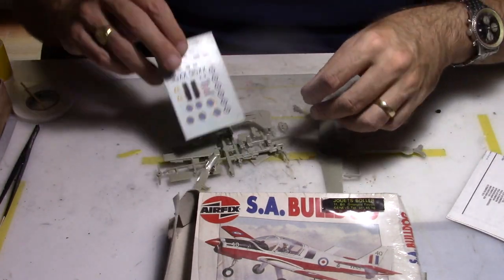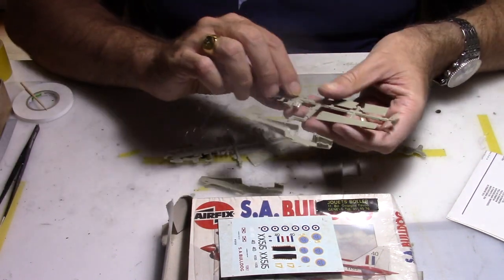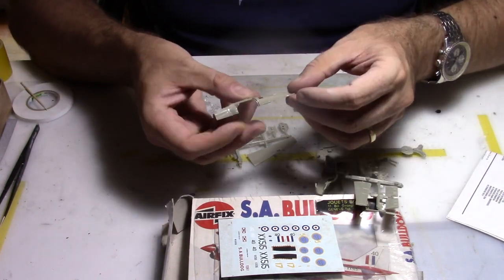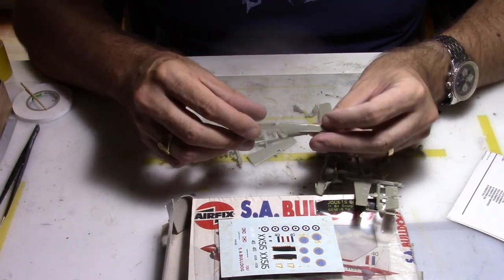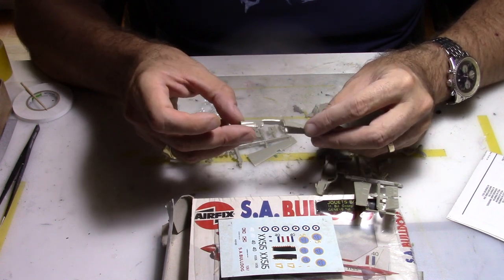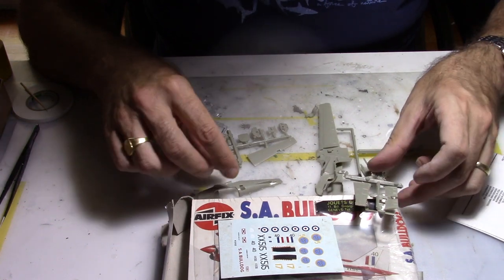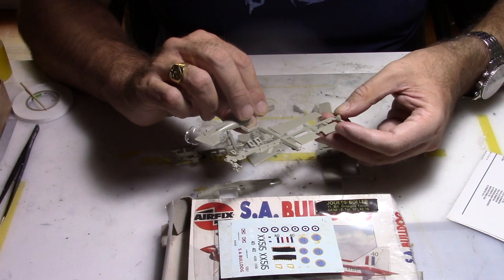Initially we have our fuselage, which will come in two parts. All the panel lines are slightly raised, so I'm going to have to rescribe most of the things. We also have some very light rivet panels, and I will try to remake that as smooth as possible.